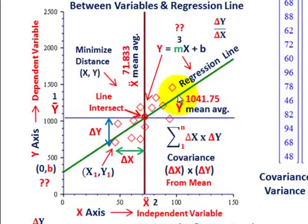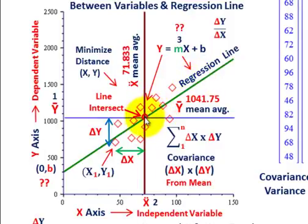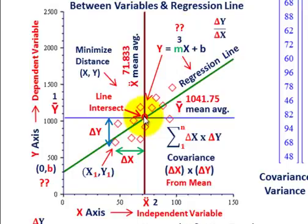We've got an upward sloping line, and that's really the change of y over the change of x. As long as we can determine that slope and know our averages for x and y coordinates, we can define that line based on its slope and the fact that it intersects with the x and y mean values.